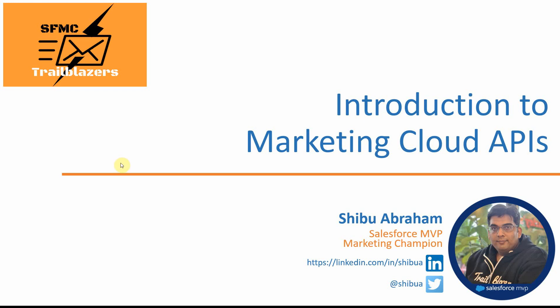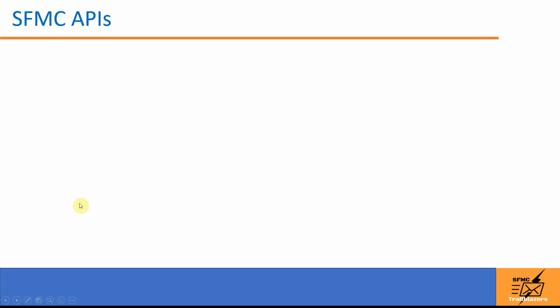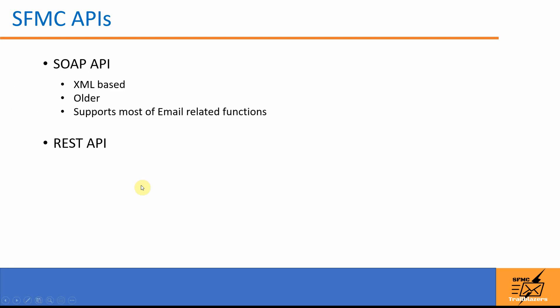Now let's look at the two main API types that we can use with Marketing Cloud. The first one is the SOAP API, which has been there from the ExactTarget days and supports access to most of the email functionality and related features. The SOAP API uses XML structure for its payload.